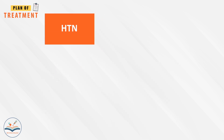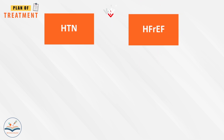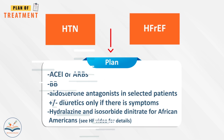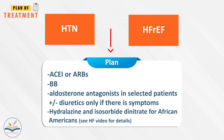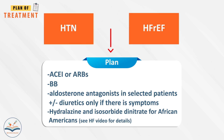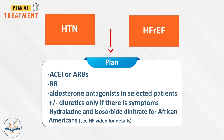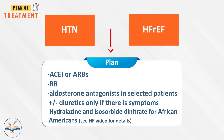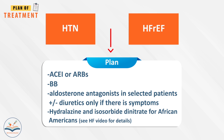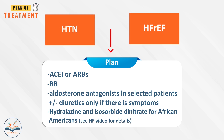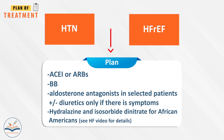In patients with hypertension plus heart failure with reduced ejection fraction, treat according to guideline-directed medical therapy. Classes used are ACE inhibitors or ARBs, plus beta blockers, plus aldosterone antagonists in selected patients, plus or minus diuretics only if symptomatic. Hydralazine and isosorbide dinitrate for African Americans. See heart failure video for details.